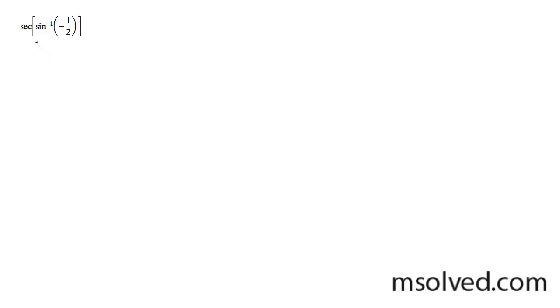The secant of the inverse sine of negative one-half. First, let's start off by solving the inside. The sine — we can rewrite this as sine of x is equal to negative one-half. Because it's the inverse sine, it's bound between negative pi over 2 and pi over 2.